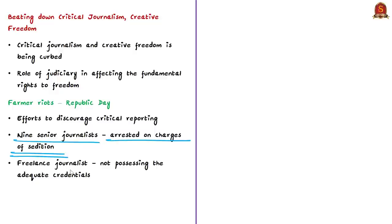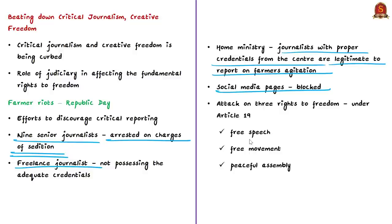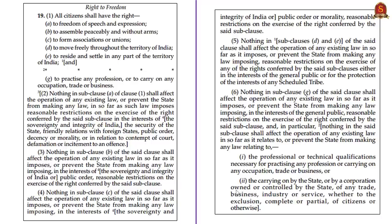In another case, a freelance journalist was also arrested for not possessing adequate credentials. After this, the Home Ministry reportedly declared that only journalists possessing proper credentials from the central government would have legitimacy to report on agitation by the farmers. Many social media pages were also blocked as part of this move, and warnings were issued to media pages that failed to abide by the legal process of securing a judicial order. The author states that these attacks were an attack on the enjoyment of Article 19 of the Indian Constitution, which specifies the right to free speech, free movement, and peaceful assembly.